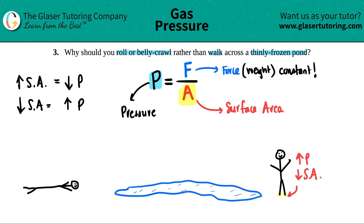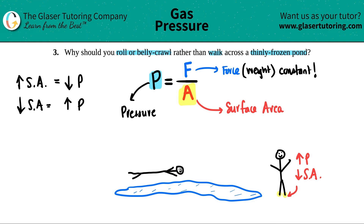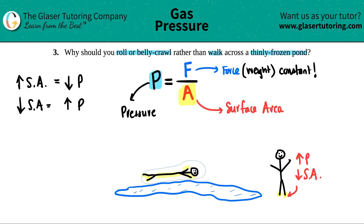Now let's do the same with body crawling. It's the same person, so the force is the same. But now I'm belly crawling or rolling across the ice. When that happens, my whole bottom side is touching the ice — mainly my stomach, and maybe my arms and legs. That's way more surface area than walking, and since surface area is greater, the pressure I'm exerting on the ice is way lower because they're inversely related.